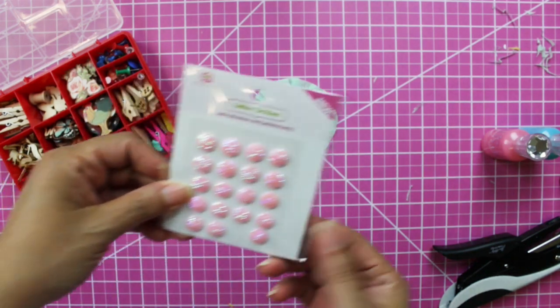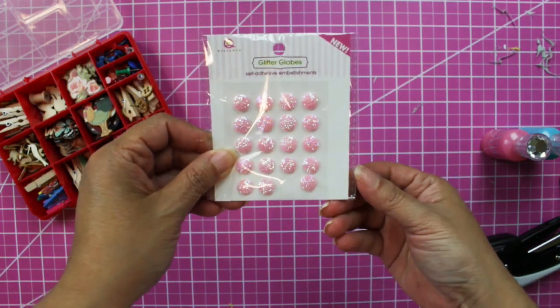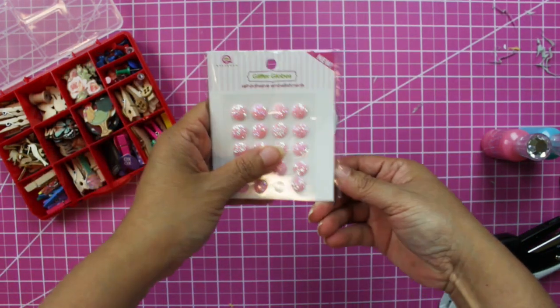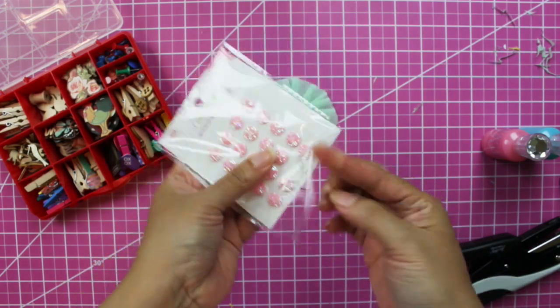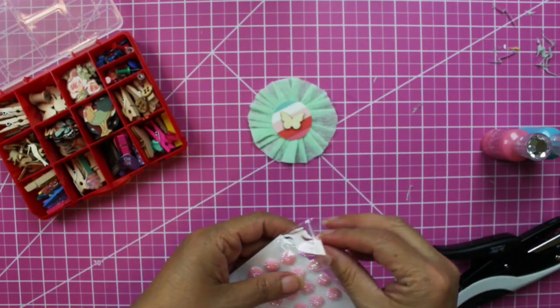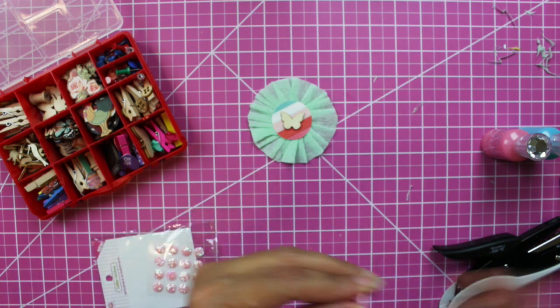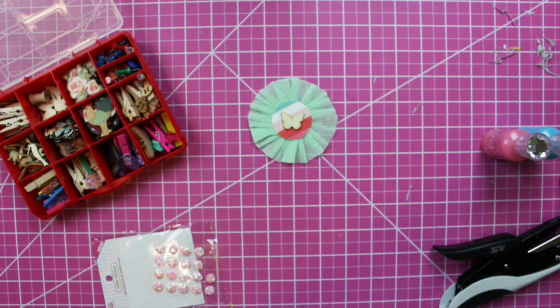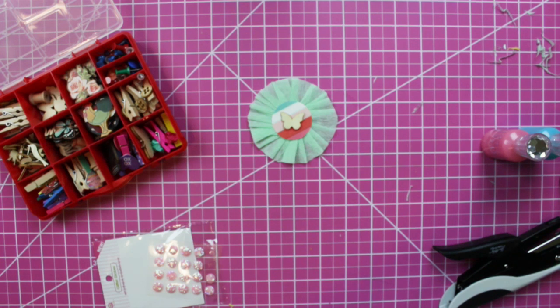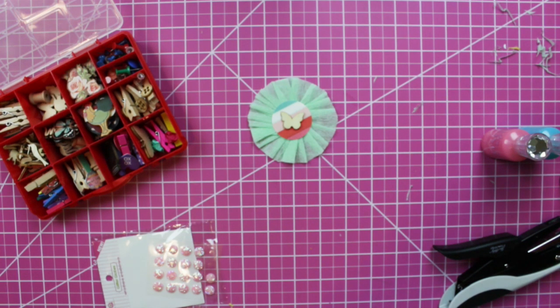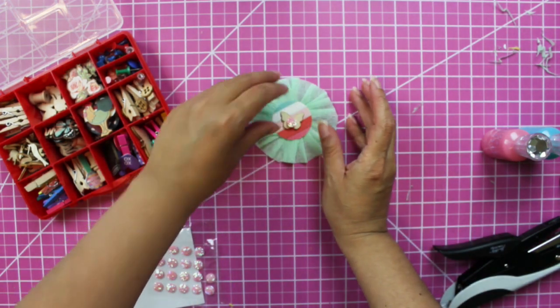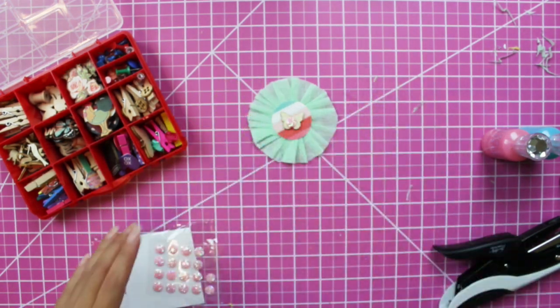I'm going to add this one. This is from Queen and Company, and it's called Glitter Globes. It's kind of cute. Put that in the center. How cute! It shines a lot.